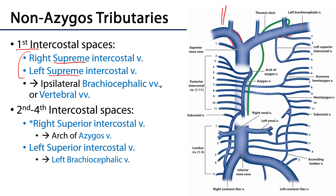The second through fourth intercostal spaces are drained through the superior intercostal veins — the supreme is above the superior intercostal veins. On the right side, intercostal spaces 2 through 4 drain into the azygous, specifically into the arch of the azygous vein. Whereas on the left side, the left superior intercostal vein typically drains into the left brachiocephalic vein, which is very long and oblique as it travels across the superior mediastinum.